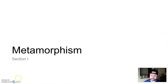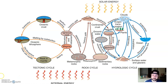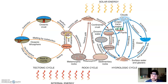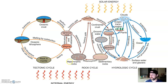So, metamorphism. This is the last branch of the rock cycle that we'll get into. We've talked about igneous rocks and volcanism. We talked about weathering and erosion as it pertains to sedimentary rocks. And now we're getting into metamorphism and metamorphic rocks. This will be our last little bit in the rock cycle.